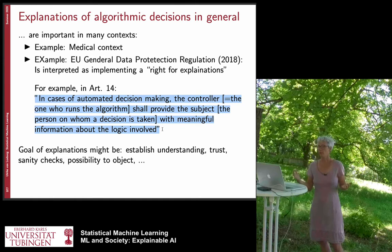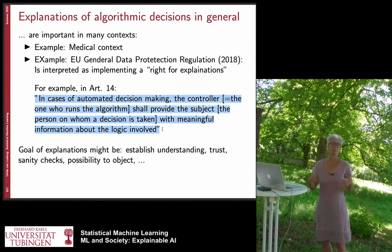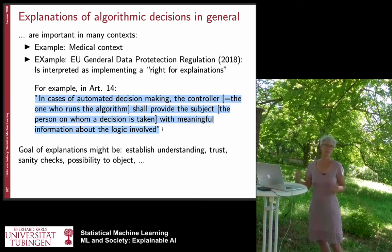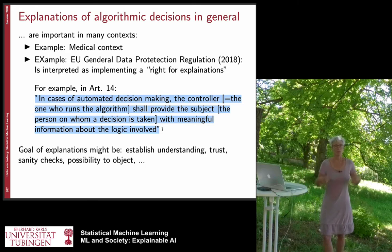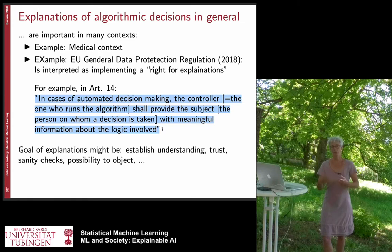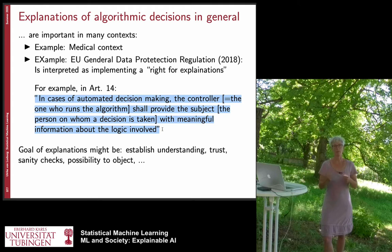In case of automated decision making, the controller — the person who runs the algorithm — shall provide the subject, the person on whom this decision is being made, with meaningful information about the logic involved. So if you're the bank and there's a customer and you tell that customer they don't get a credit, the customer should get some explanation for why they didn't get the credit.